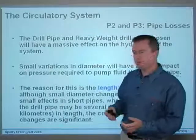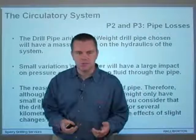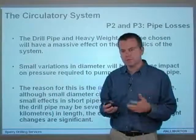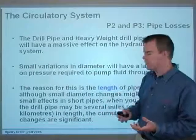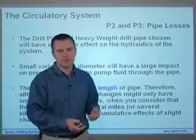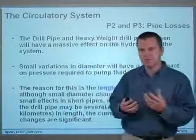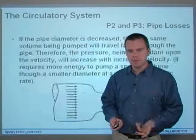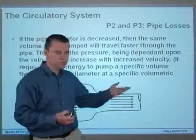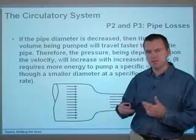Looking at P2 and P3 — basically the drill pipe and heavyweight drill pipe in your system — they'll have a massive effect on the hydraulics of the system. Small variations in diameter will have a large impact on the pressure required to pump fluid through that pipe. The reason is the length of the pipe: you've got several miles or kilometers of drill pipe in there, so if you change the diameter, the cumulative effect will be quite significant. If the pipe diameter is decreased, the same volume being pumped will travel faster through the pipe, and the pressure, which is dependent on fluid velocity, will increase.